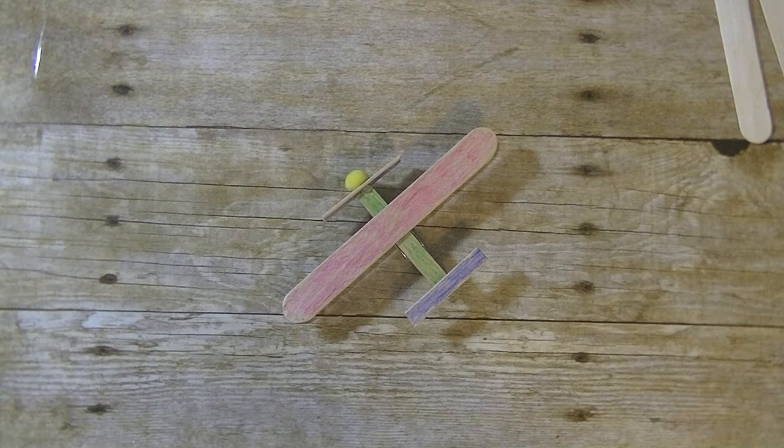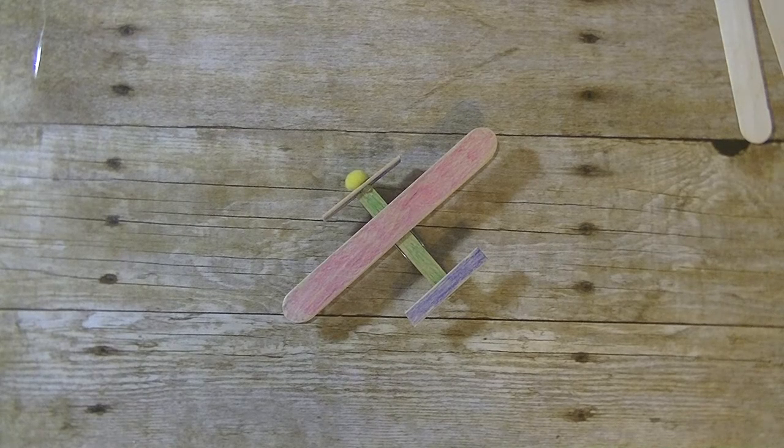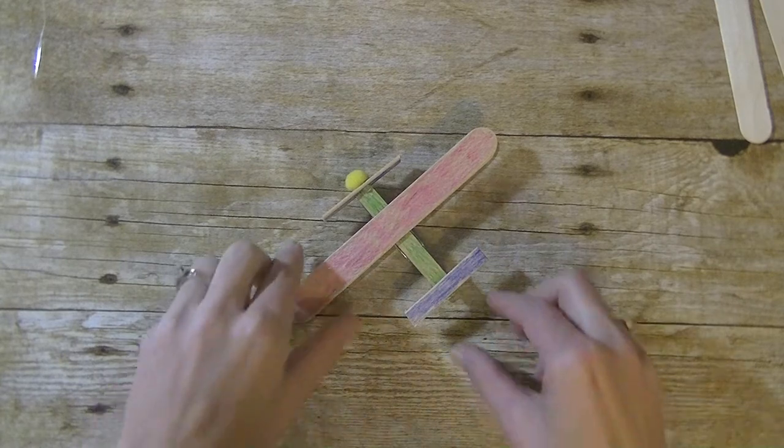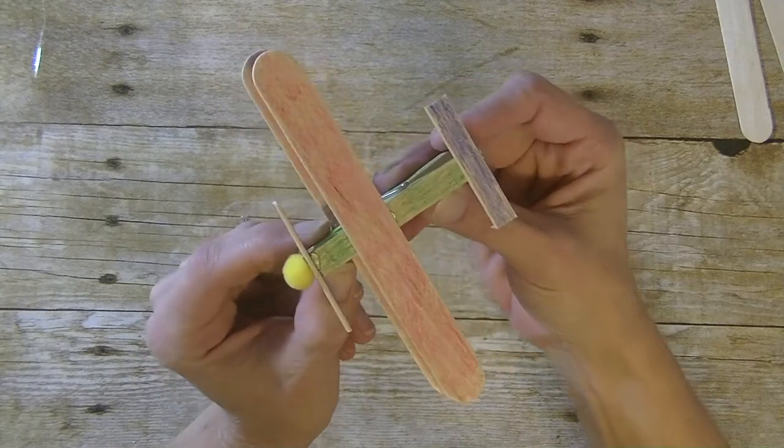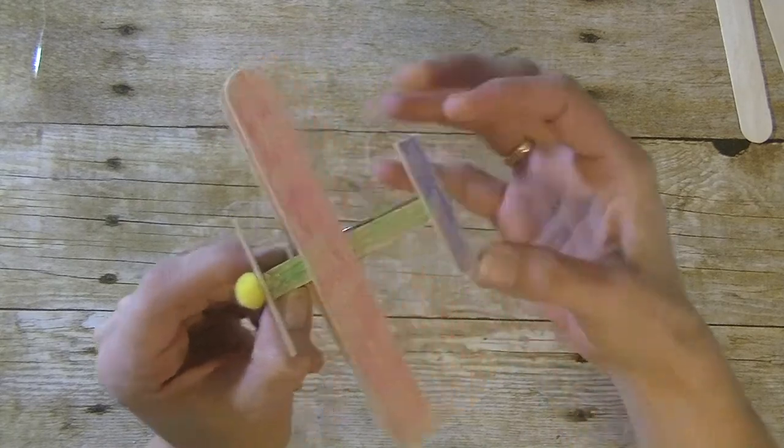Hey guys, it is me Stace. I am back again today with another Toddler Tuesday video. Today's project is super fun - we are making clothespin craft stick airplanes. Isn't that cute? This one I went ahead and colored with crayons, but you can use markers or paint or leave it plain.